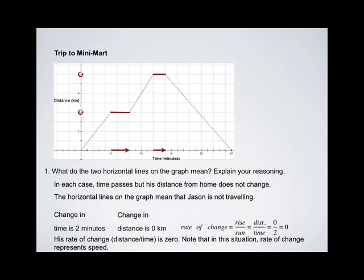So in this situation, his rate of change represents his speed. For both of those sections where the line is flat, he has no change in distance. He has no speed.